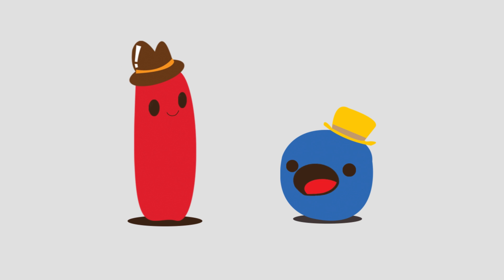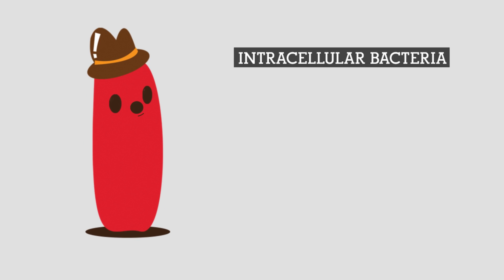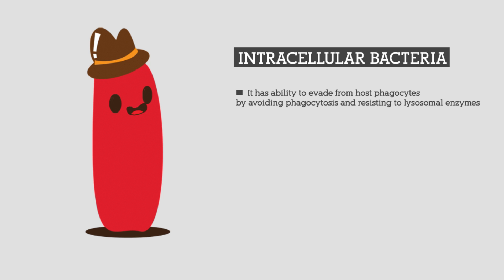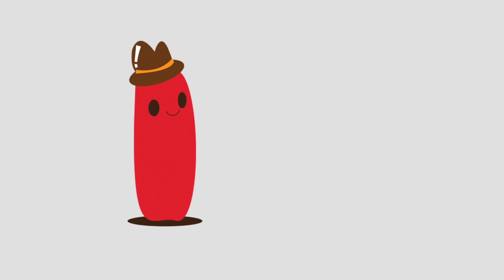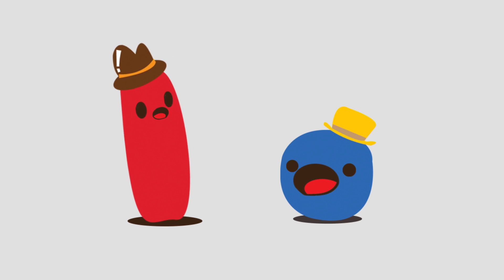That's so interesting! Are you an intracellular bacterium? How are you different from extracellular bacteria? Let me explain. I and my friends can infect humans and cause a range of diseases. We have the ability to evade host phagocytes by avoiding phagocytosis and resisting lysosomal enzymes. Eventually, we can multiply in phagocytes and infect nearby cells. My friends include Salmonella typhi, Neisseria meningitidis, and Listeria monocytogenes. By the way, I am Mycobacterium tuberculosis.